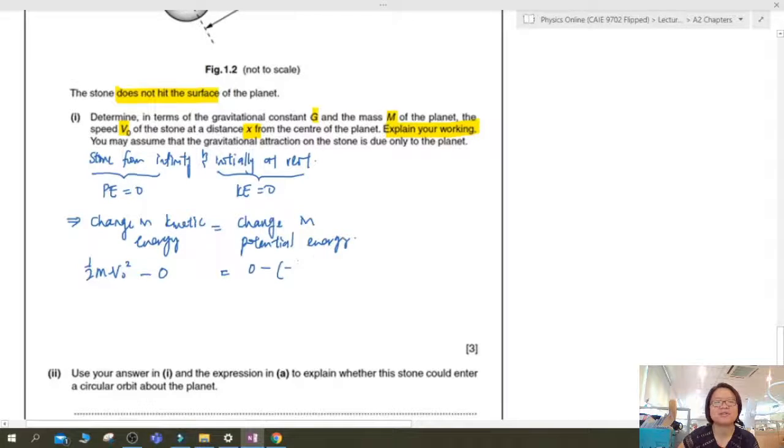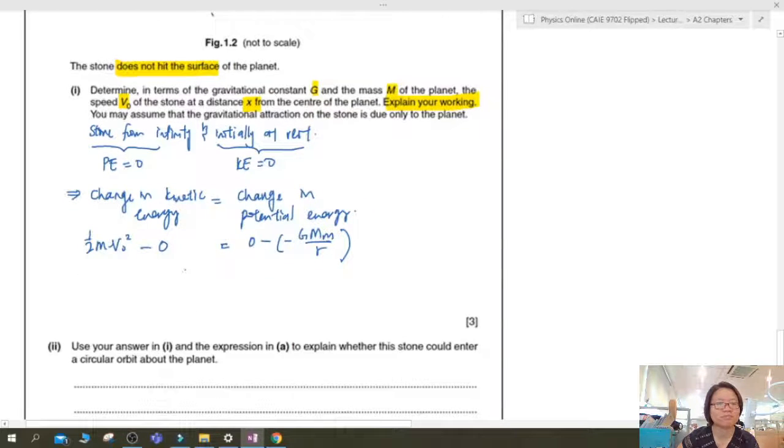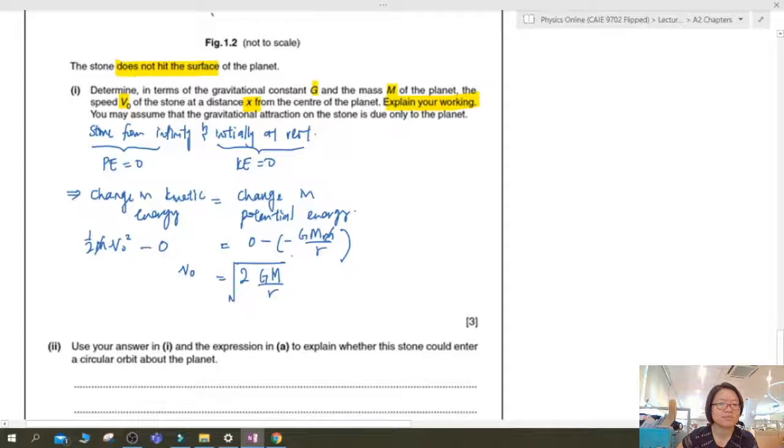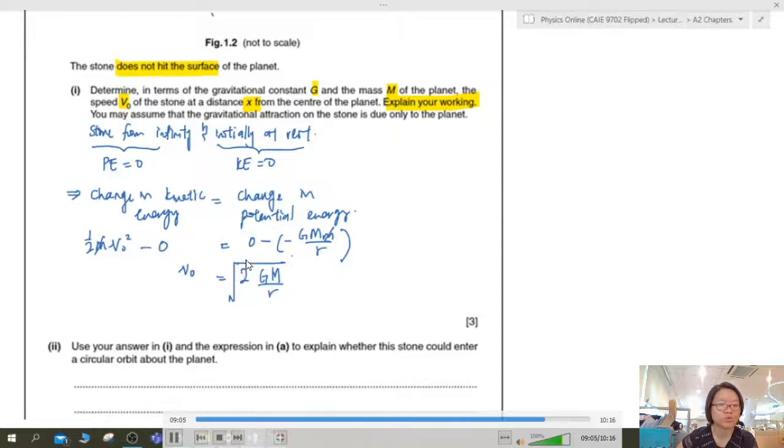Right. So I think you have seen this pretty lot of times already. Anyway, half mv square minus zero will be zero minus negative GMm over r. We have talked about this before. Alright. So simplifying this, you will get v0 square. You know why they say explain your working or not? Because students are very good at memorizing. So some students will straight away jump to here because they memorize when to put a 2, when to not put a 2. You put the 2 here when it is the escape speed or you follow the question. If it's an orbital speed, then you shouldn't put a 2.